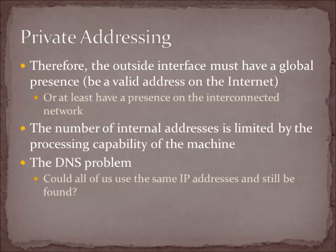The important point is that the outside interface on your NAT router has to have a global presence — a public internet address. Generally speaking, the outside network is public and uses globally unique public addresses, while the inside network is private, and those private addresses are translated to the outside global public address. You can have lots and lots of private addresses — universities like RIT use large numbers of private addresses for lab and educational spaces. The only real limiting factor is how good the router is at handling all the translation, which is a significant amount of work.